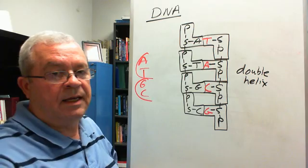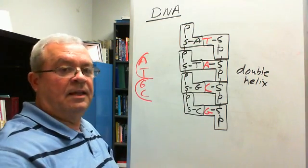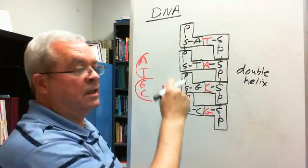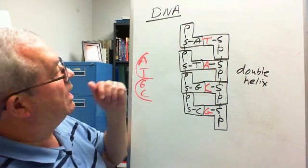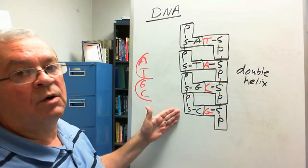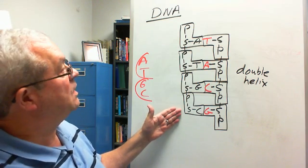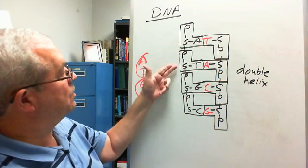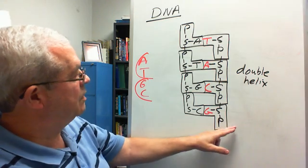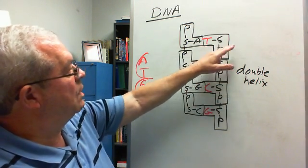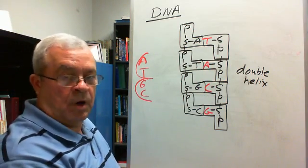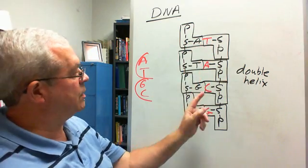A helix is like a slinky, except a slinky when expanded is a single helix. This is a double helix because each side of the ladder forms an individual helix. The sides of the ladder are alternating phosphate and sugar groups — phosphate, sugar, phosphate, sugar — the same on both sides going in opposite directions. This goes on for thousands of these. And what forms the rungs of the ladder? Those are the nitrogenous bases.